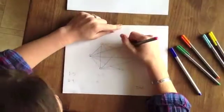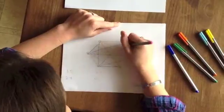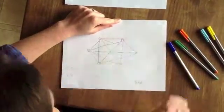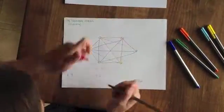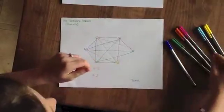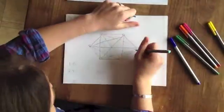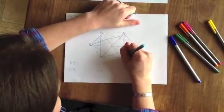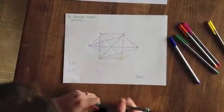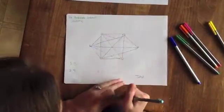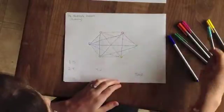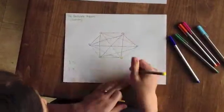Person number four is going to shake one, two different times. Person number five only has one person's hand to shake, and person number six has already shaken everyone's hands. So we can put a zero for him.